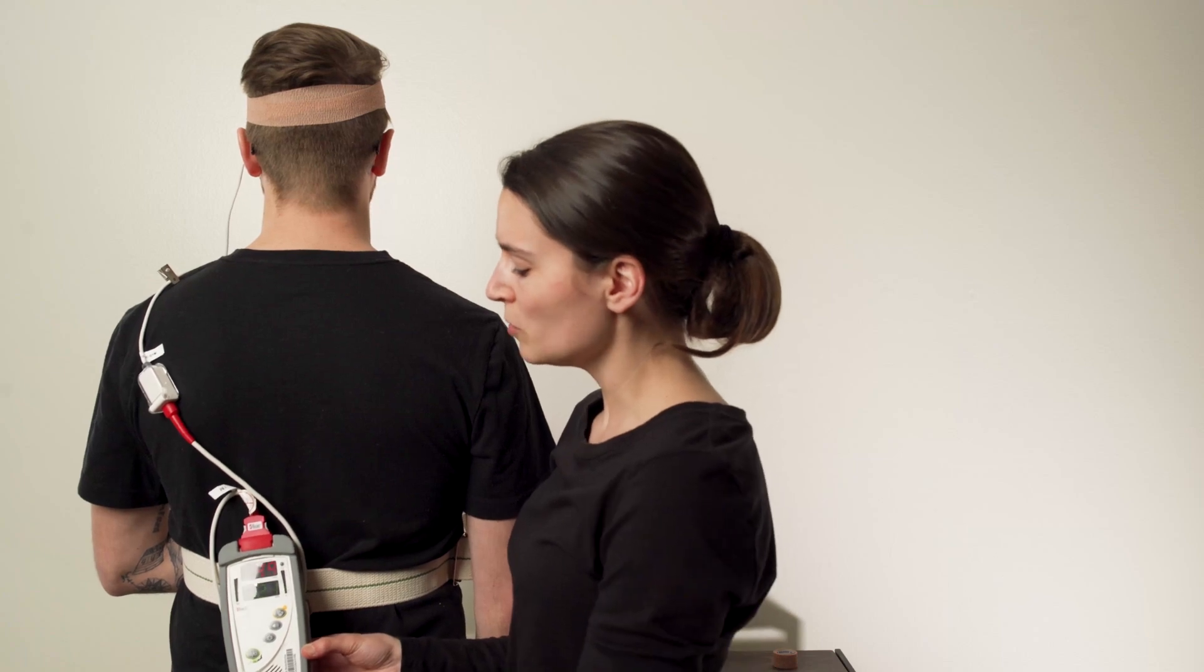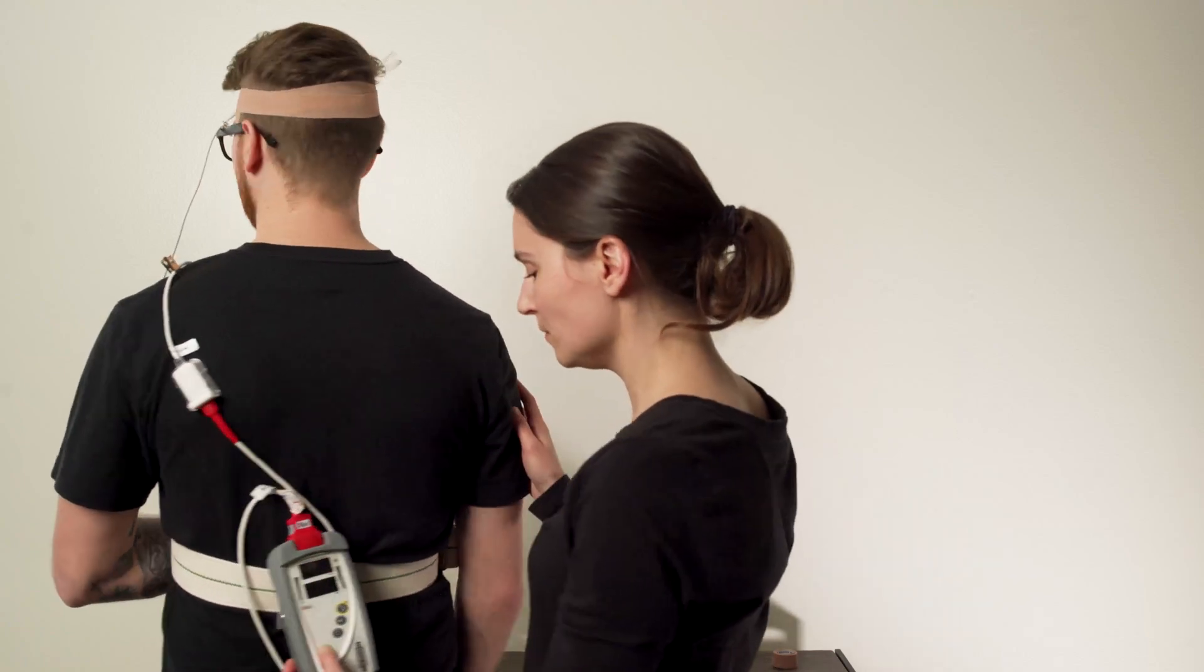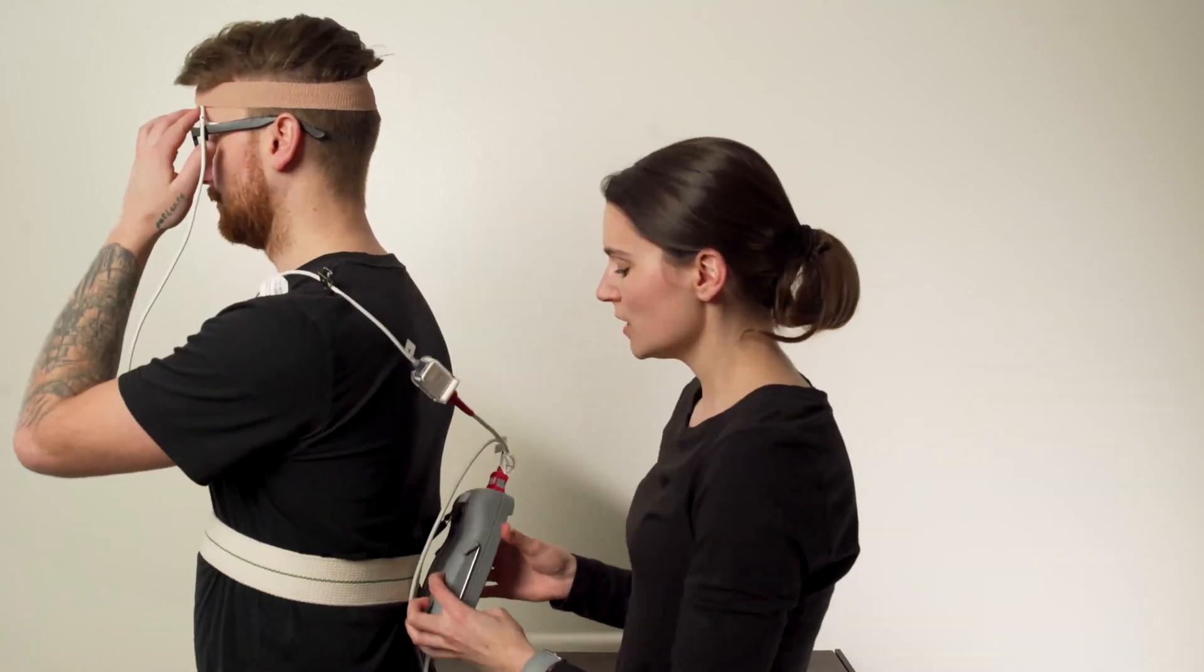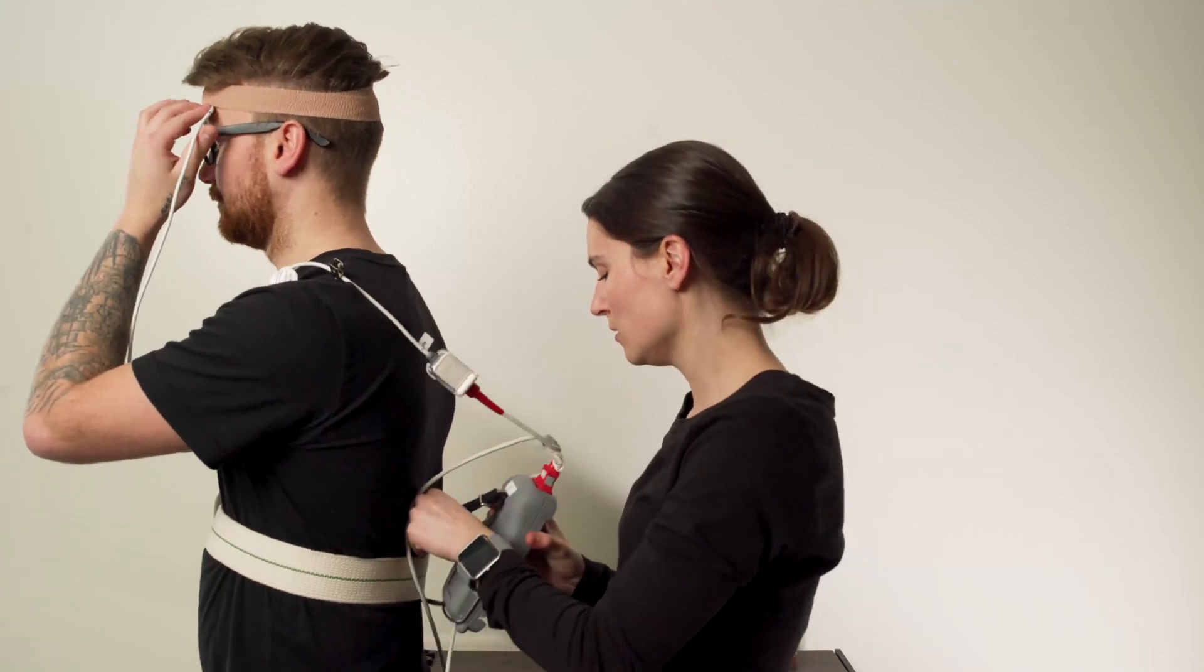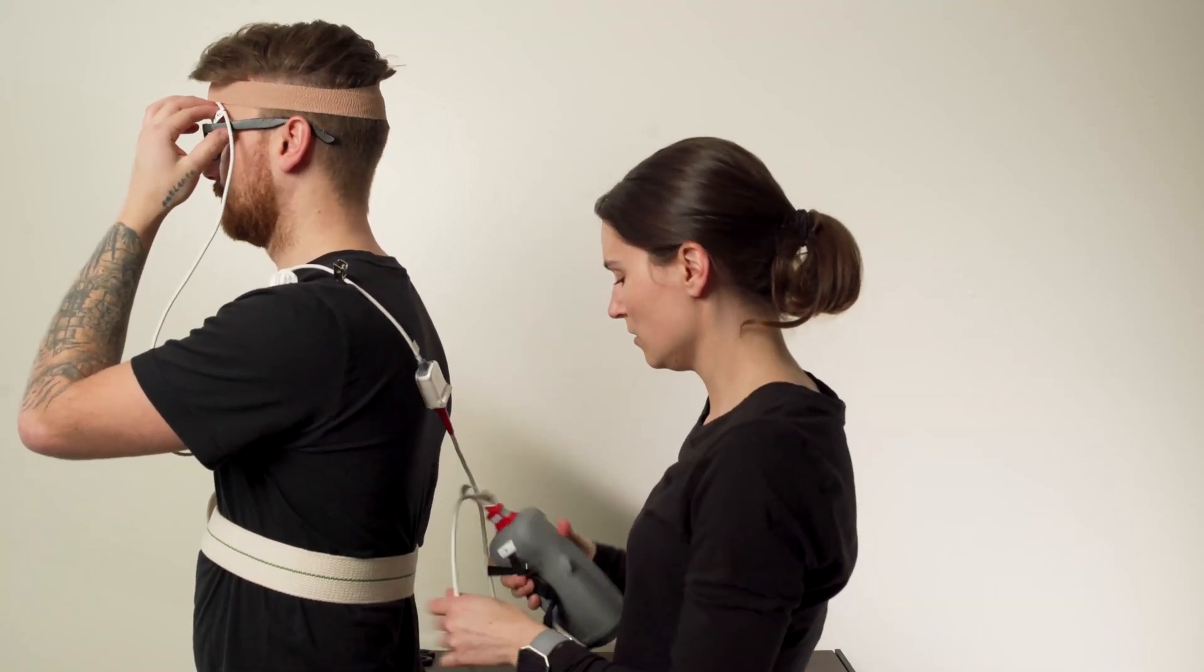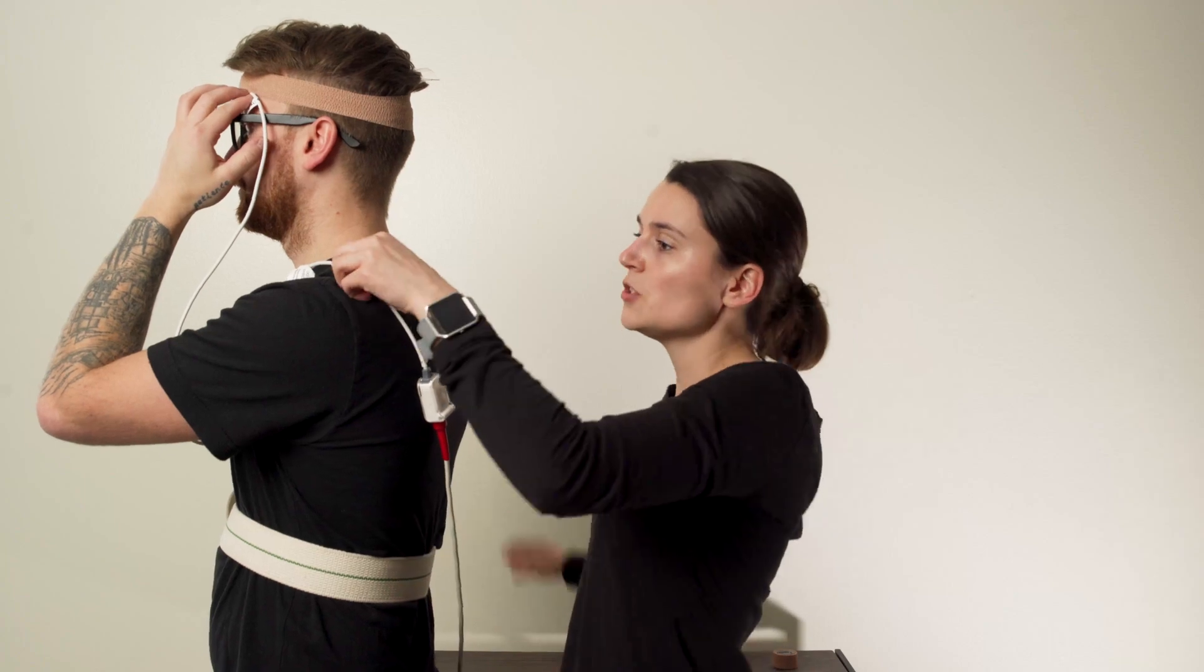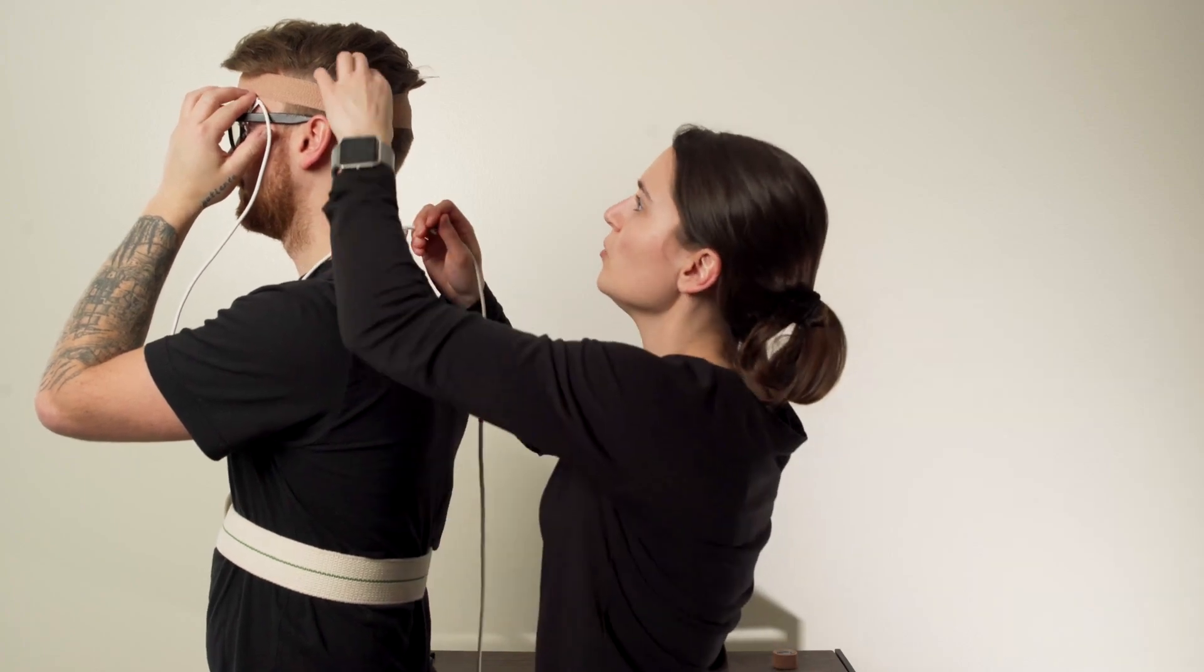Once you're done working with the patient, you'll remove the equipment. First, take it off the gait belt, undo the clip, and remove the Coban.